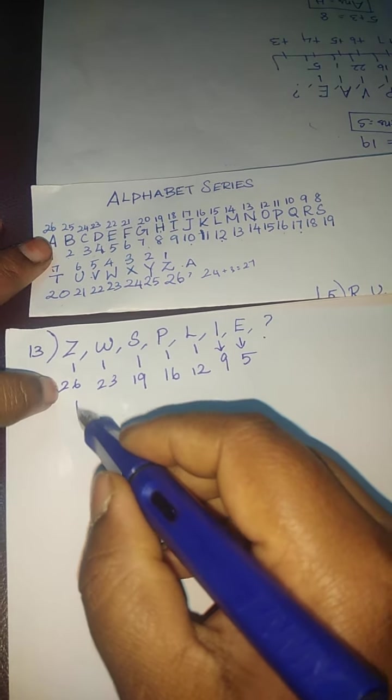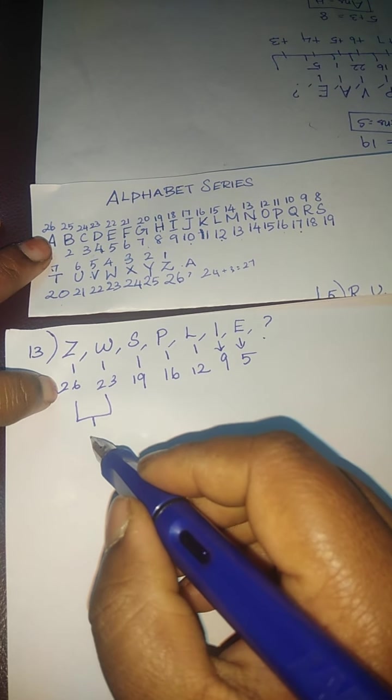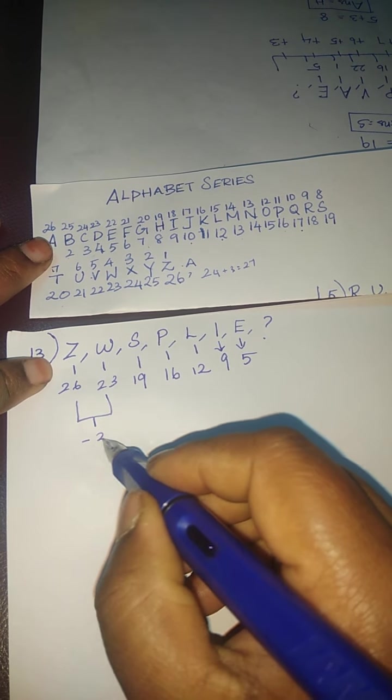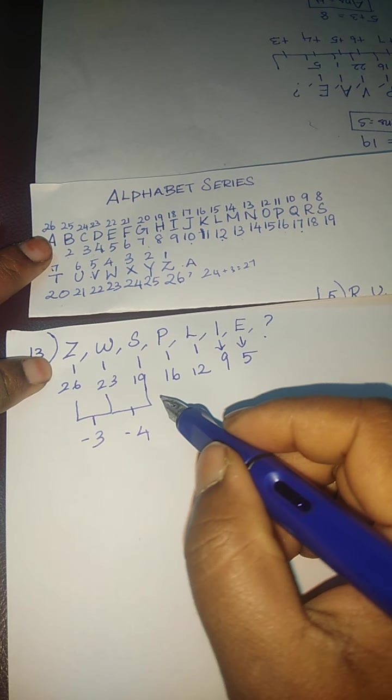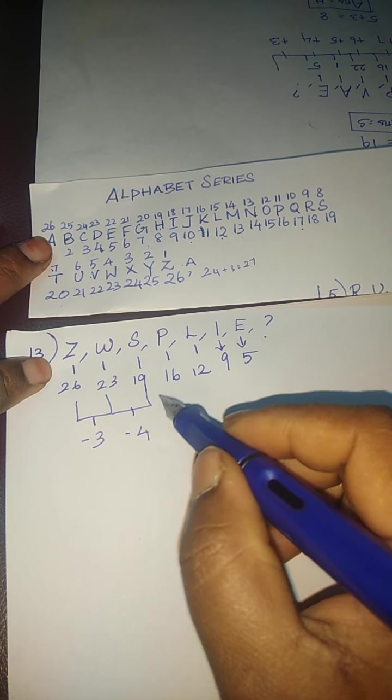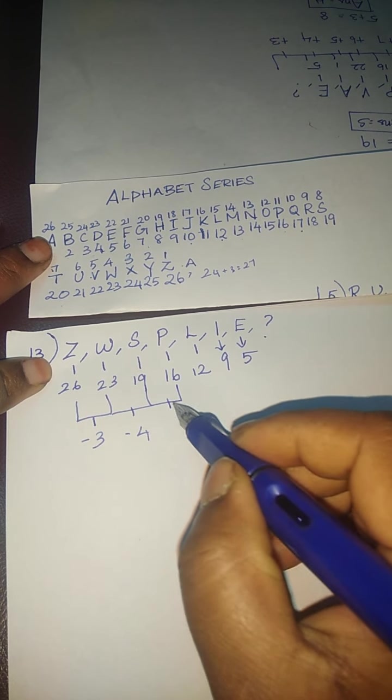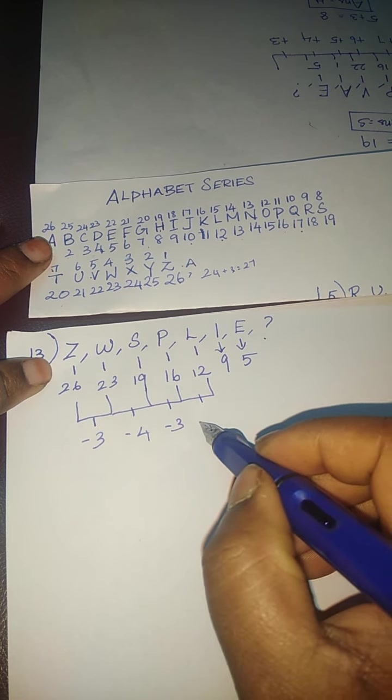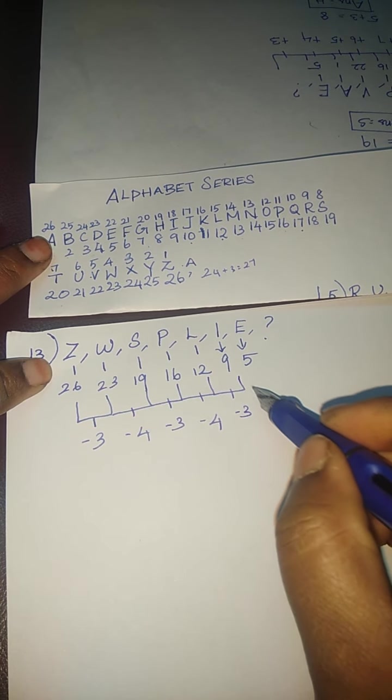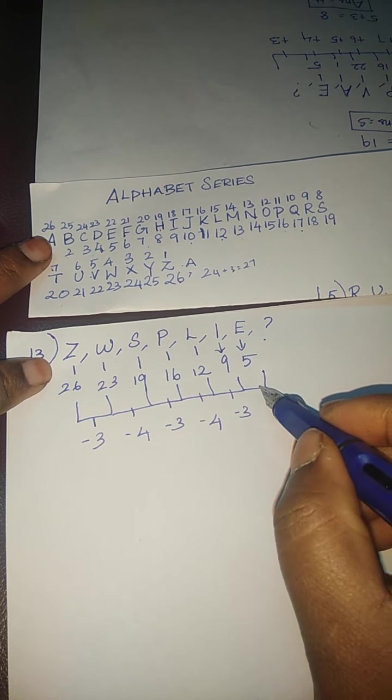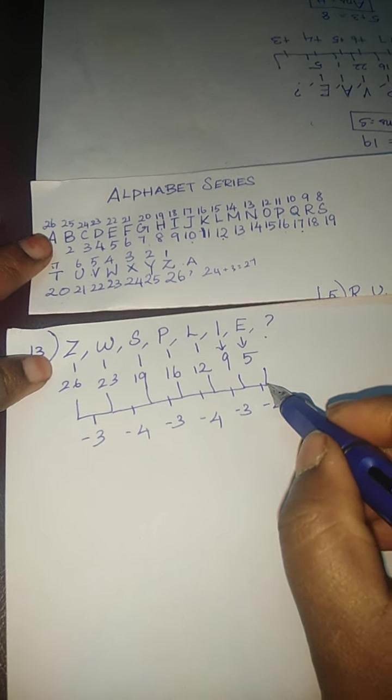So, what is the difference between these numbers? Here, it is minus 3, here it is minus 4, here it is minus 3, then minus 4. Then what comes next?